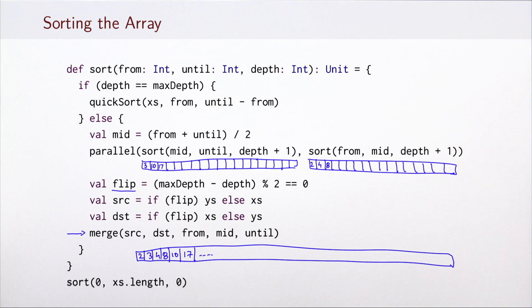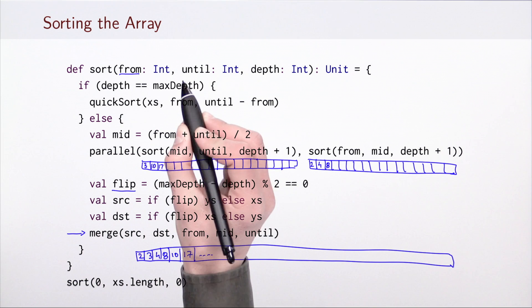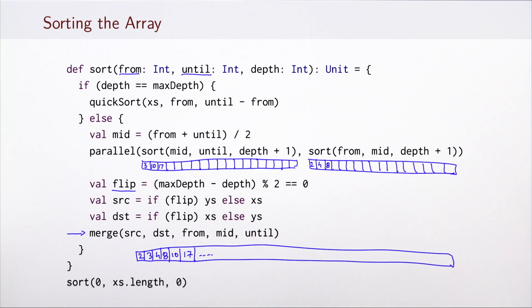So this is the definition of sort that takes the segments, the beginning and the end. In order to sort an array we simply invoke this version of sort starting from zero and going to the entire length of the array.